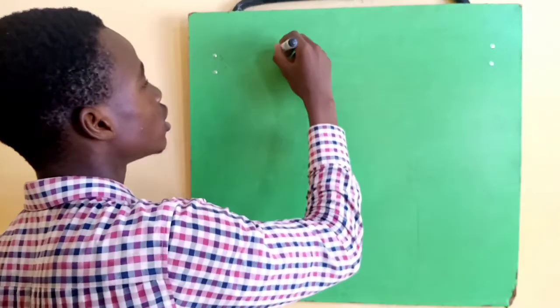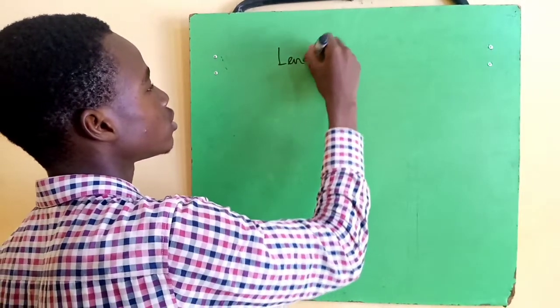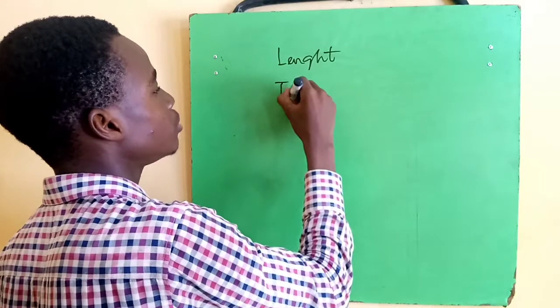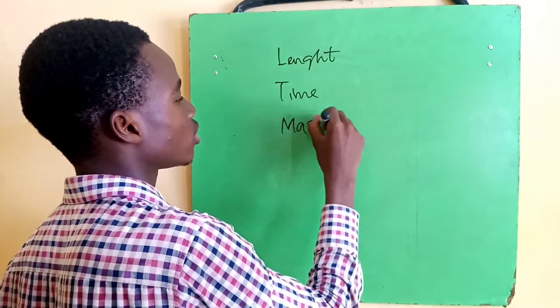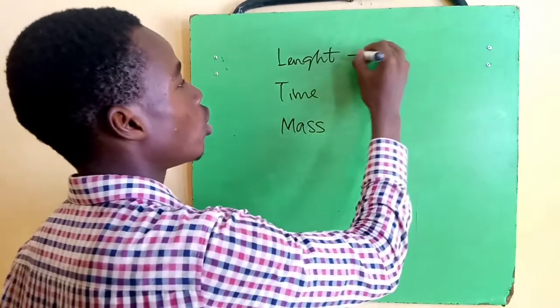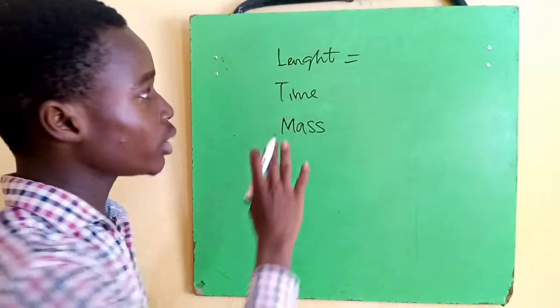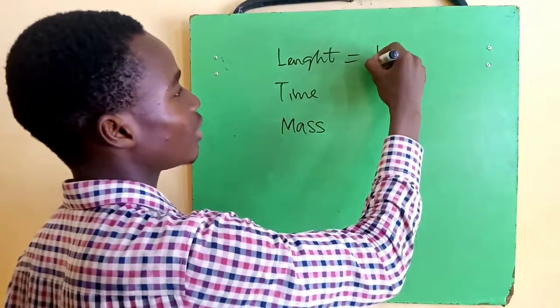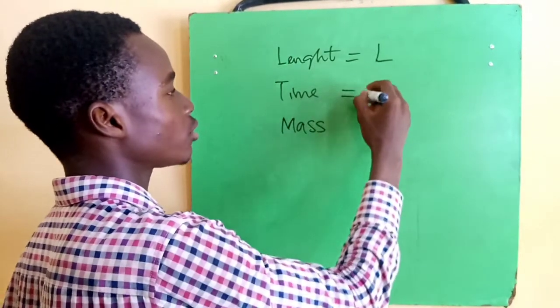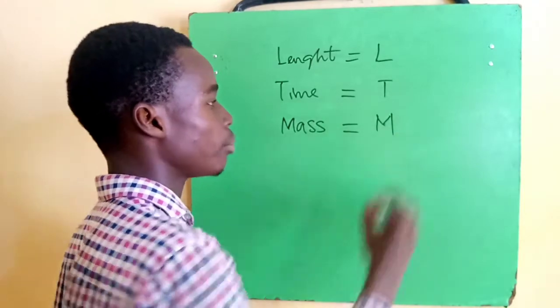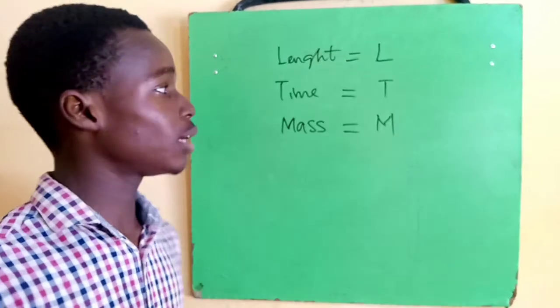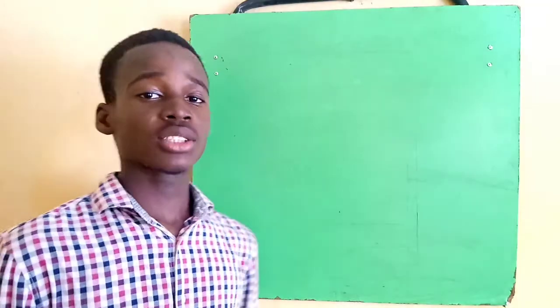Which is length, time, and mass. In dimension, the dimension of length is represented as L, the dimension of time is represented as T, and the dimension of mass is represented as M. So we're asked to find the dimension of force.